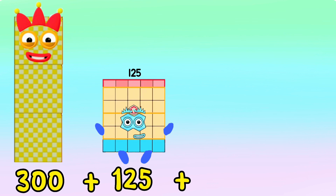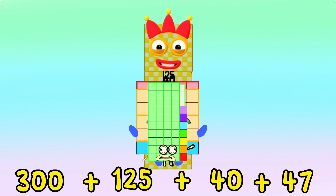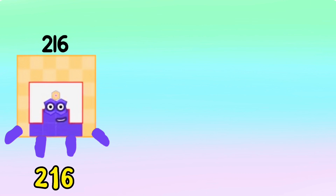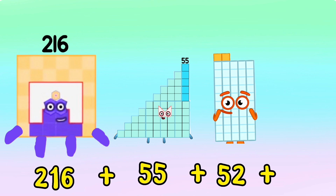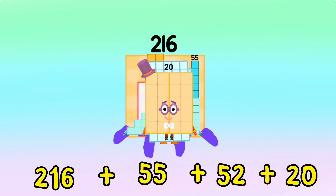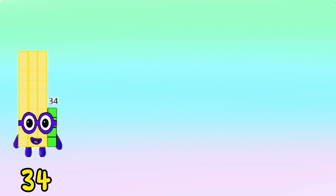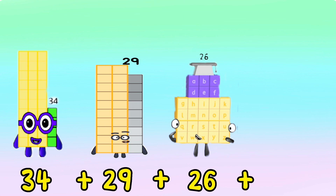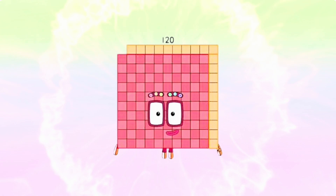300 plus 125 plus 40 plus 47 is equals to 512. 216 plus 55 plus 52 plus 20 is equals to 343. 34 plus 29 plus 26 plus 31 is equals to 120.